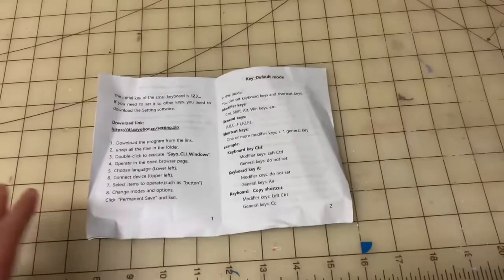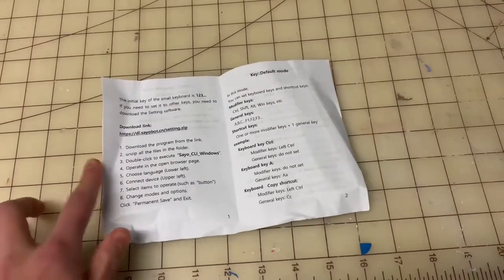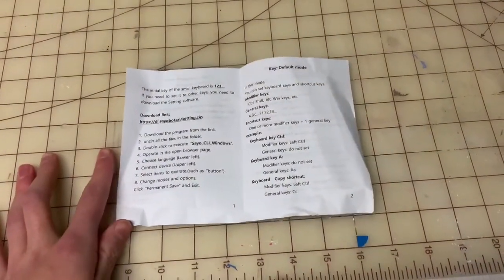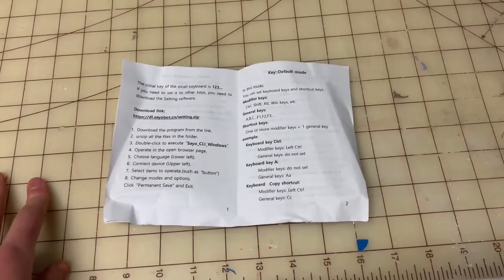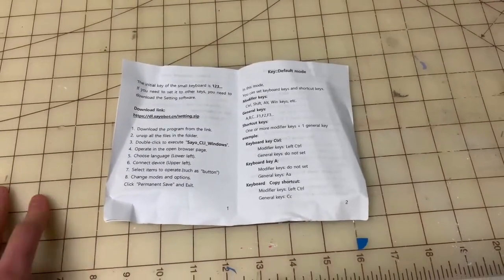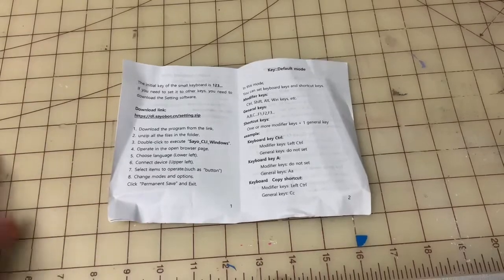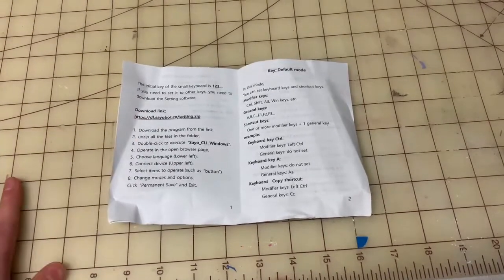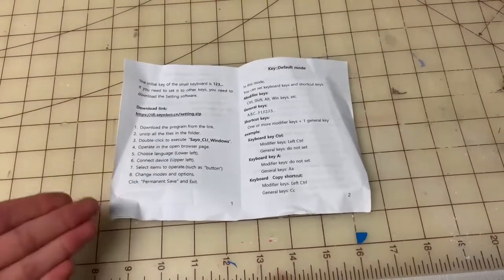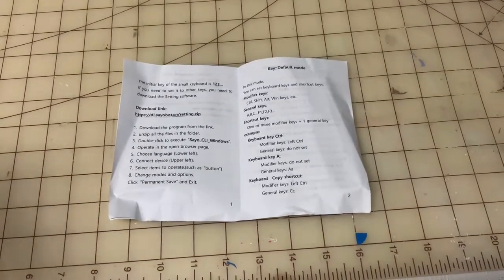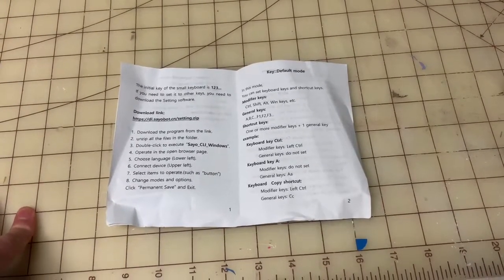There is an instructions sheet in the box to show you how to get the software. It was a little bit confusing, but if you follow their steps exactly, then you should be able to get it figured out. I had no problems. The only thing you have to do is type in the link up top and then just follow the directions on the sheet.